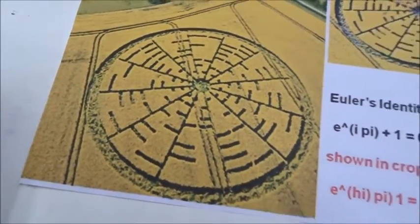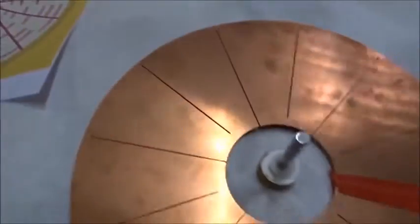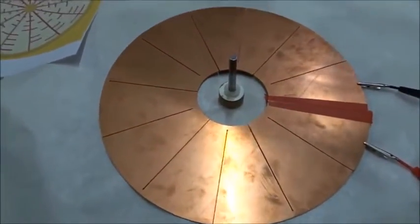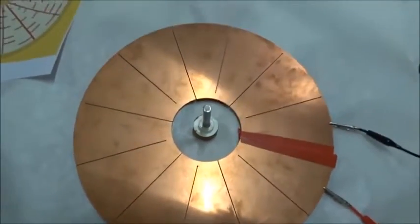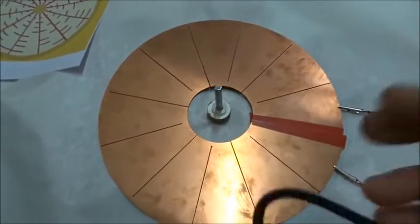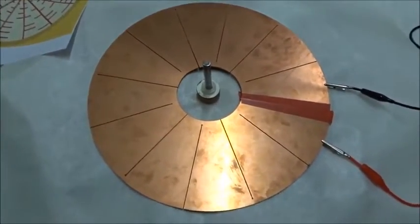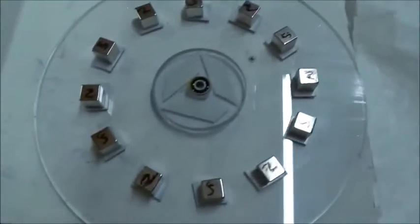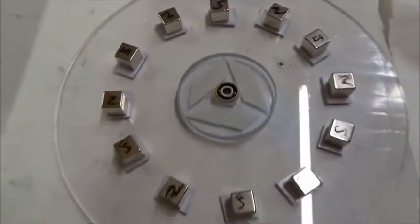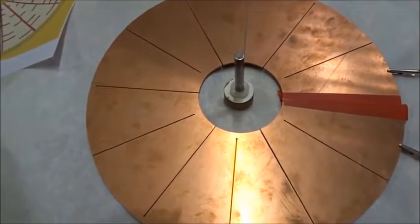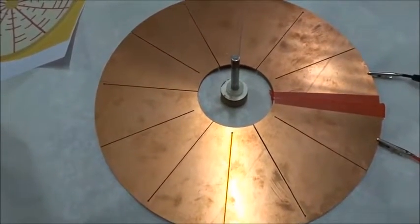Suppose we had a copper disc of almost the same type with 12 segments, just like in the crop circle. A small cut allows current to go in and out. On top of that we put a rotor with 12 magnets, one in each groove, alternating N and S all around. We put that on top of this copper disc, and then we'll learn why they drew the crop picture.